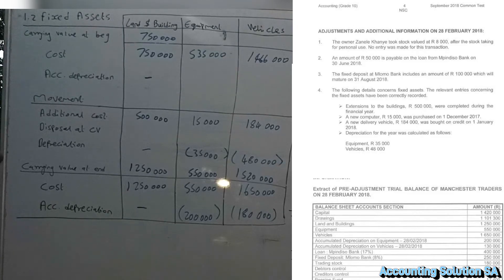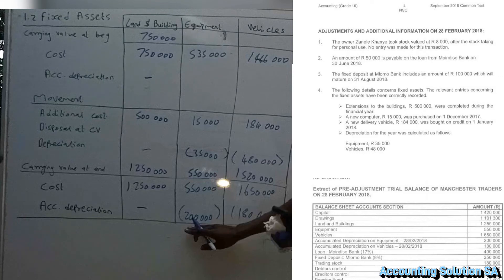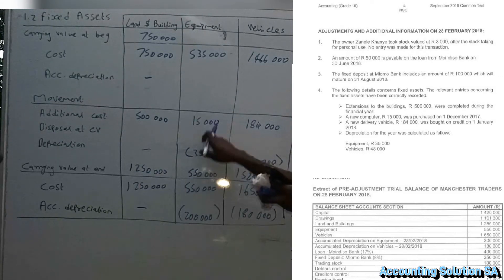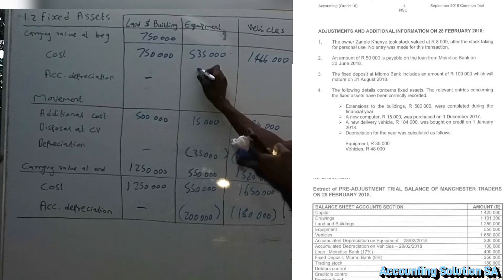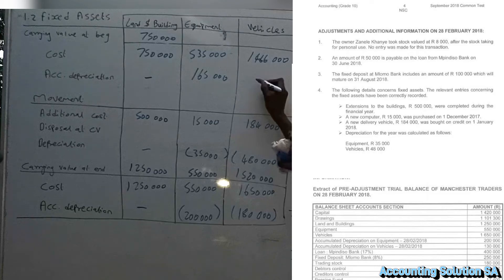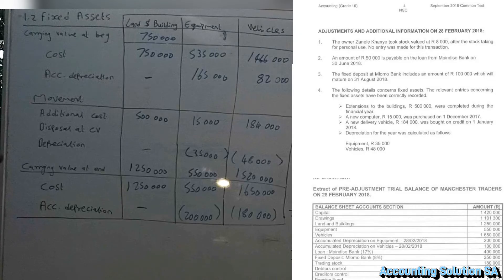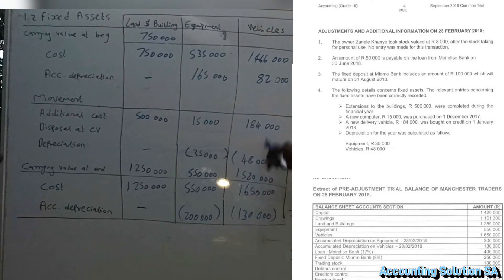For accumulated depreciation it is the same reverse approach: opening plus additions gives us the closing figure, so we just subtract. For equipment: 200 000 minus 35 000 gives an opening accumulated depreciation of 165 000. For vehicles: 180 000 minus 48 000 gives 132 000 at the beginning. Note the depreciation is 48 000, not 408 000, and the accumulated figure is 180 000, not 18.